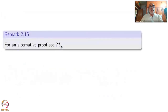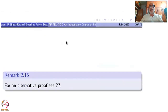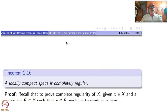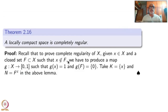We will later prove the same result in a different way as well. Another corollary: a locally compact space is completely regular. I am calling this a corollary because it is an easy consequence of our lemma. Regularity was already built into our definition.